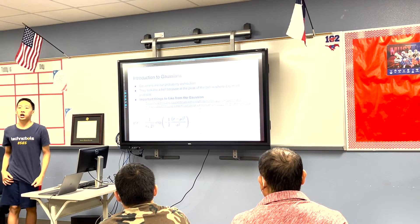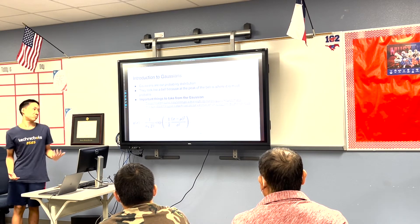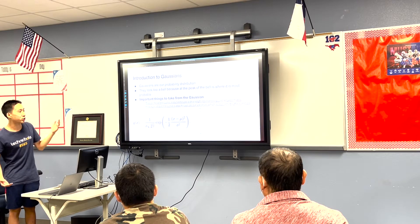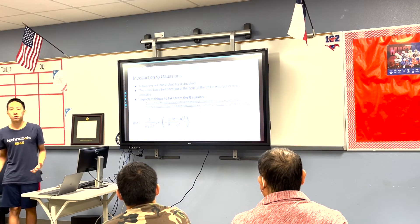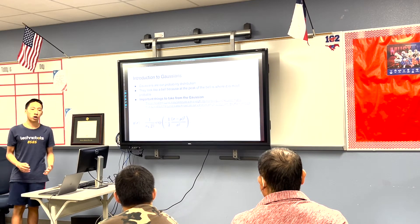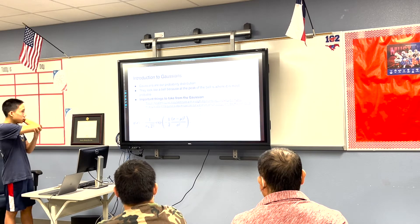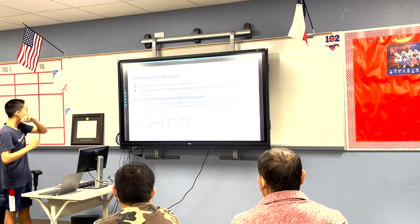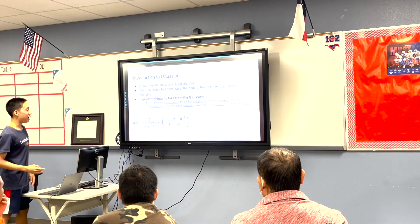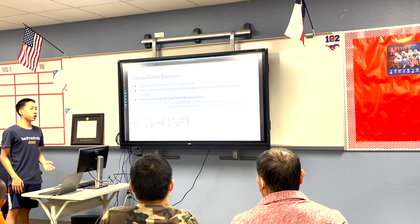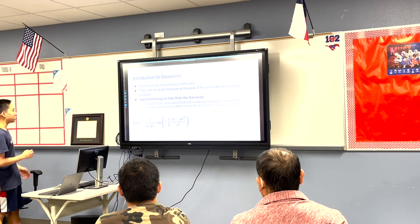Here's where we introduce Gaussians — probability distributions. This is important because when dealing with the Kalman filter, we're trying to figure out the levels of uncertainty that the inputs carry. We can represent each input as a Gaussian, where the center of the curve is our estimate, with everything else being a probable estimate around what we think it is.